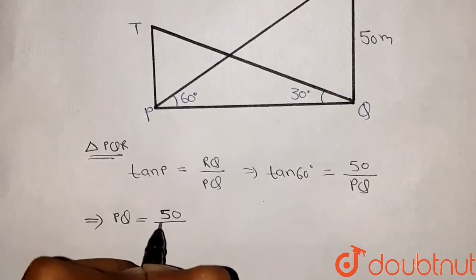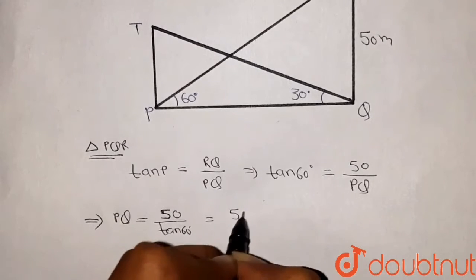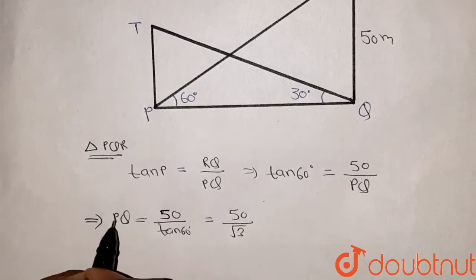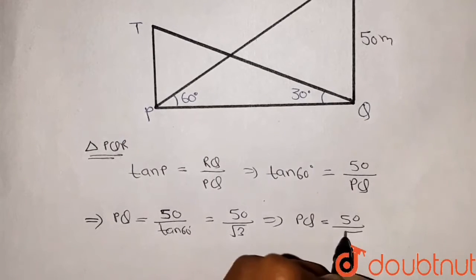tan of 60 degrees. Now tan of 60 degrees is root 3, so we got the value of PQ as 50 divided by root 3.